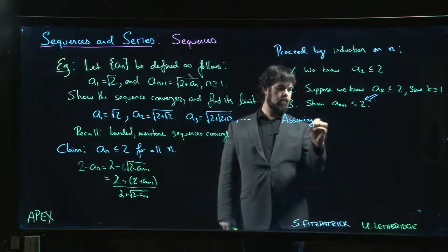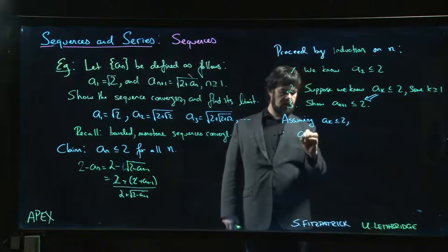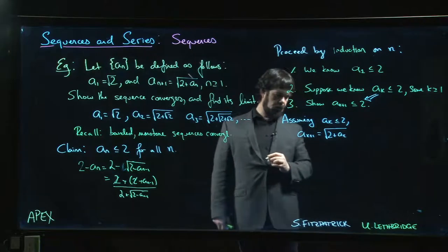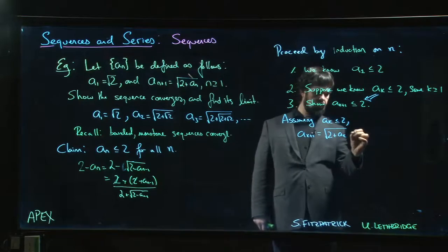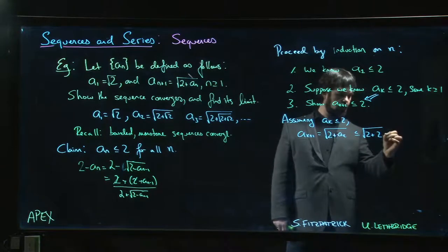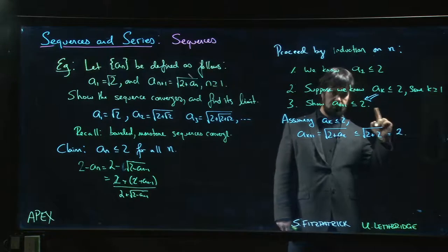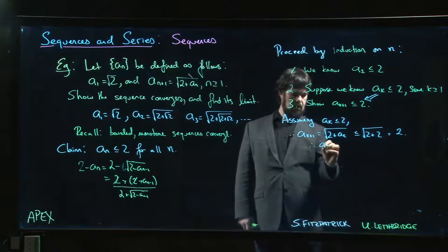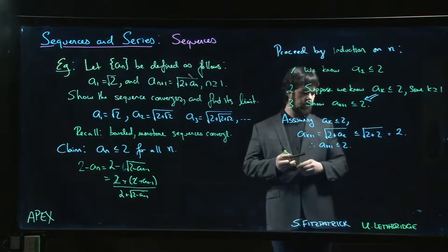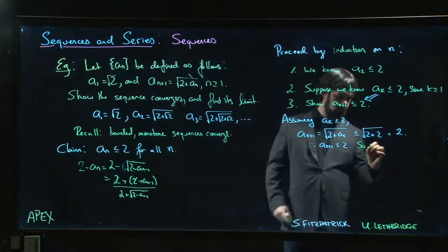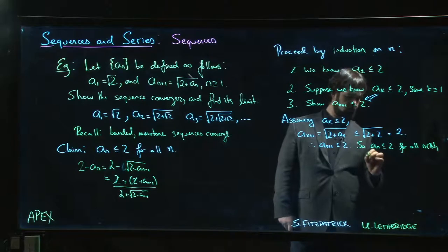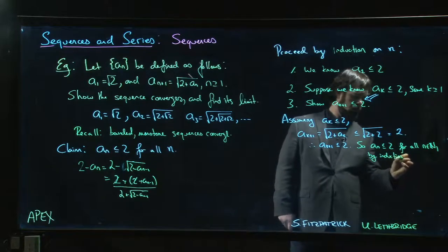It remains to show: if a_k ≤ 2, then a_{k+1} ≤ 2. Well, a_{k+1} by definition equals root(2 + a_k). We've assumed a_k ≤ 2, so this is less than or equal to root(2 + 2). But 2 + 2 is 4, and root 4 is 2. Therefore a_n ≤ 2 for all natural numbers n.